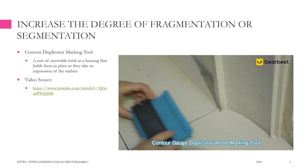Increase the degree of fragmentation or segmentation. For example, a contour duplicator marking tool. A row of movable teeth in the housing holds them in place as they take an impression of the surface.